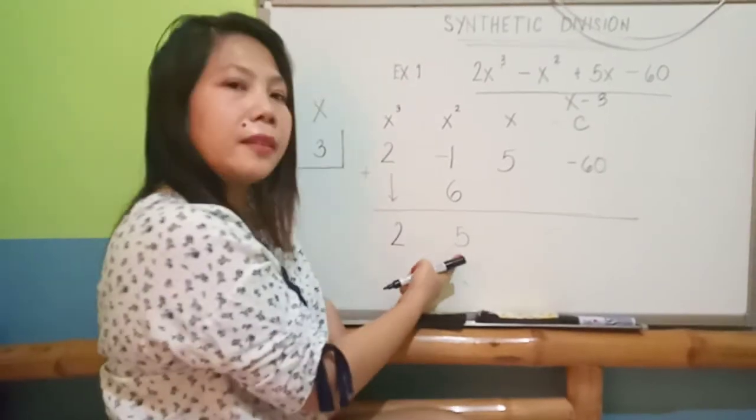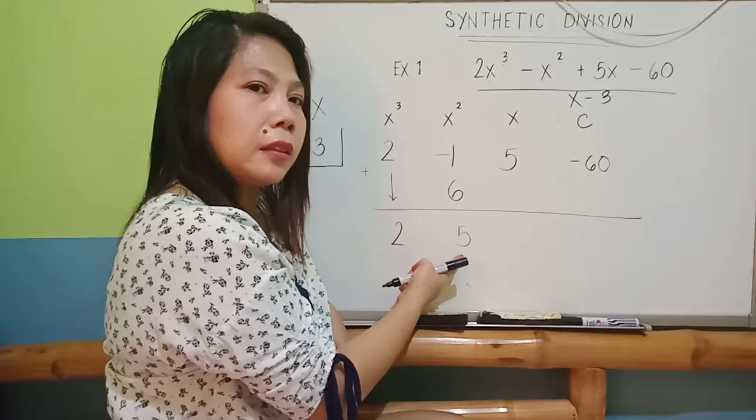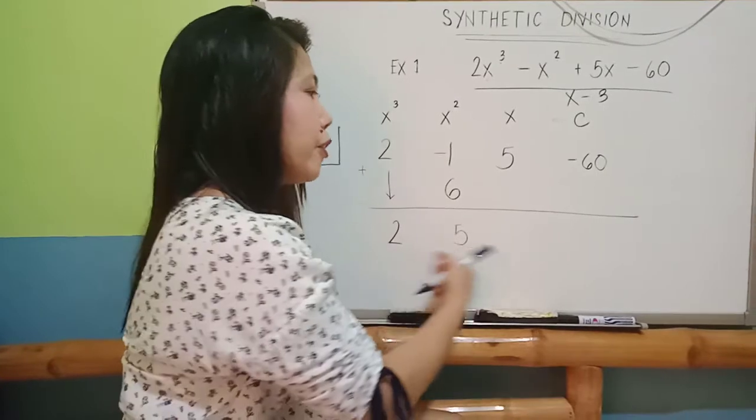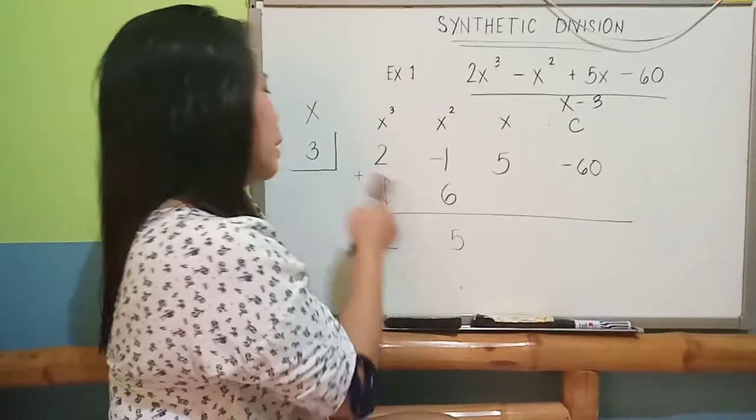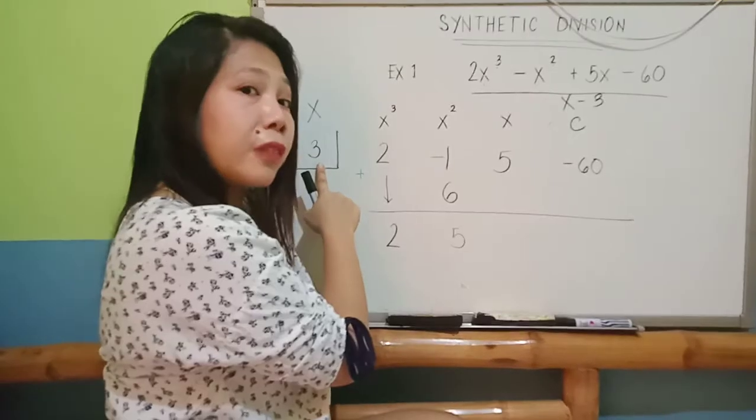There you go again. You have a number here. As I've said earlier, whatever your value here should be multiplied by 3. 5 times 3 should be 15.